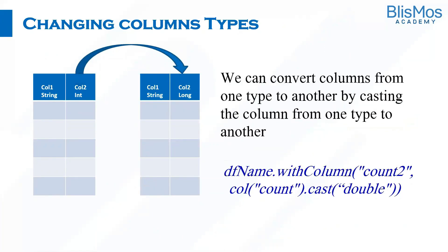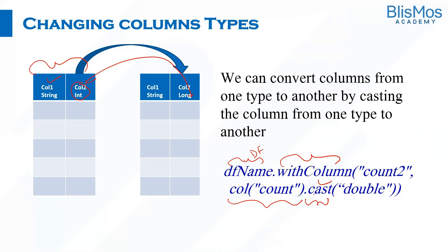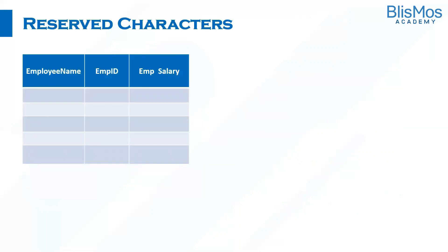Sometimes when dealing with data you may need to change the data types of columns. In that case we can do casting. For example, if a column is int and you want to change it to long or double, you can use the cast() method — specifying the data frame, the new column name, and casting the existing column to the target type.